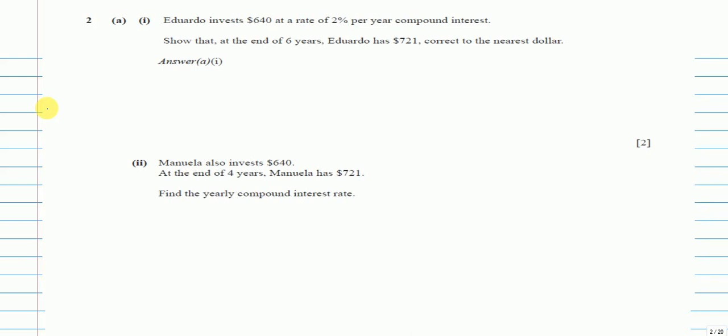Question 2. Eduardo invests $640 at a rate of 2% per year compound interest. Show that at the end of 6 years, Eduardo has $721 correct to the nearest dollar. For this question, whenever they say show that, all we have to do is just solve the question normally and then see if our answer matches with the final answer.